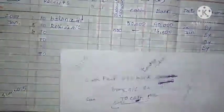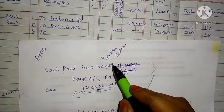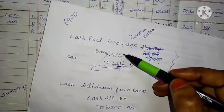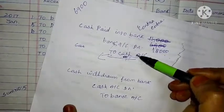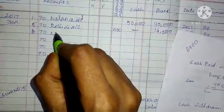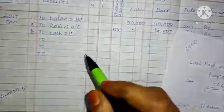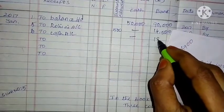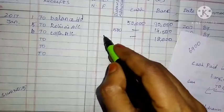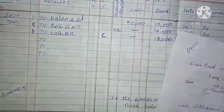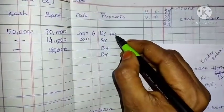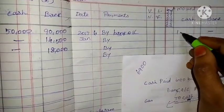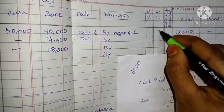Date 6 contra entry: cash column amount entered, bank column 18,000, LF column marked 'C' for contra. Credit side — bank account, bank column dashed, cash column 18,000, LF column 'C' for contra. Date 7, to sales account — bank column 11,800, discount column 200, total amount 12,000.